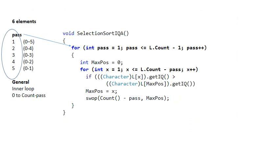Okay, so let's try and understand the actual code. The first thing we think about is how many passes do we need. So in this case, we have six elements, so we said earlier that we need five passes.